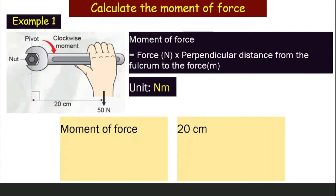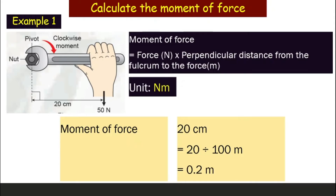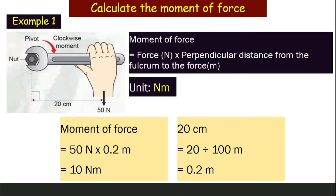We have a problem: the distance is 20 centimeters, not meters. So before calculating, we need to convert 20 centimeters to meters. Since 1 meter equals 100 centimeters, we divide by 100: 20 ÷ 100 = 0.2 meters. Now we can calculate: 50 newtons × 0.2 meters = 10 N·m. It is very important that you write down the unit, newton meter.